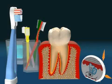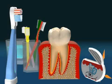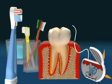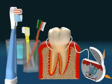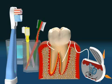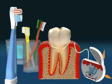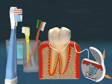Another cause of wedge-shaped defects can be the improper use of dental floss. If dental floss is laid around the tooth and moved back and forth, then the dental floss cuts into the tooth after a while. Because of this, it's important to learn the correct cleaning technique in order to avoid damaging your teeth while flossing.